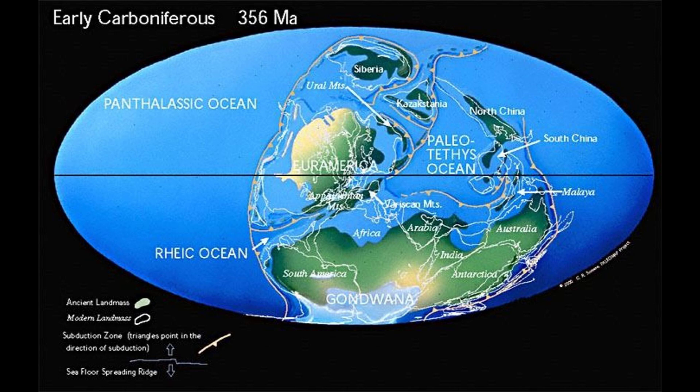During the early Carboniferous, the Paleozoic Oceans between Euroamerica and Gondwana began to close, forming the Appalachian and Mariscan Mountains.